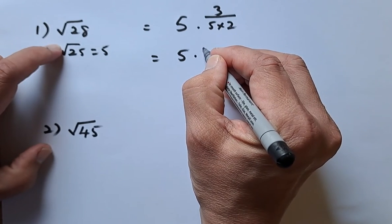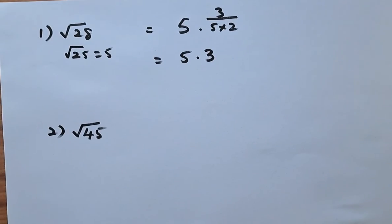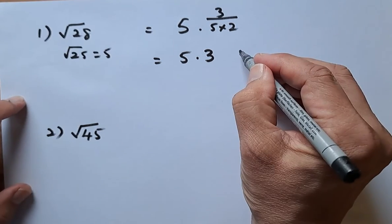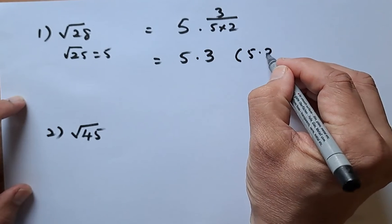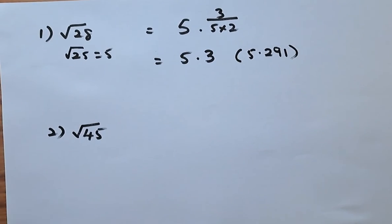I have checked the calculator beforehand and the actual answer is going to be 5 point 291, which is very close to the original answer.